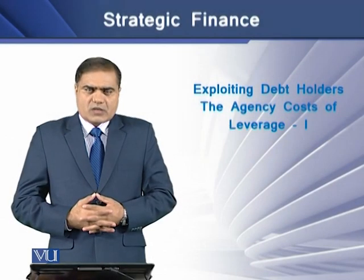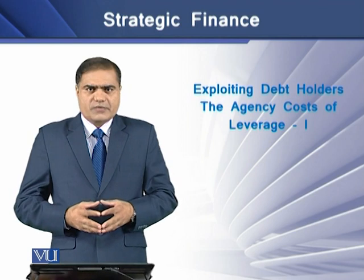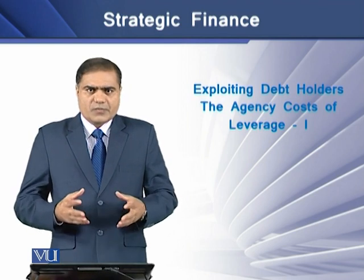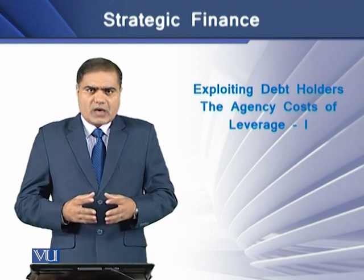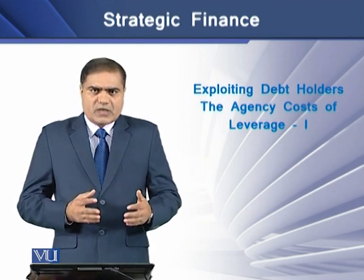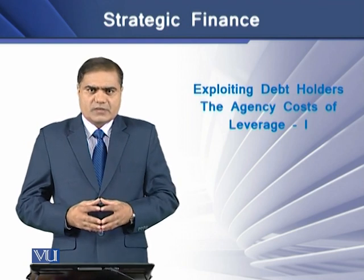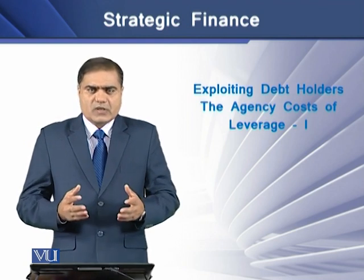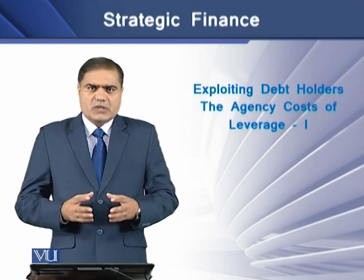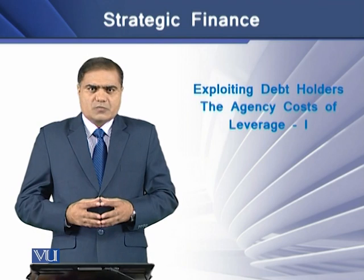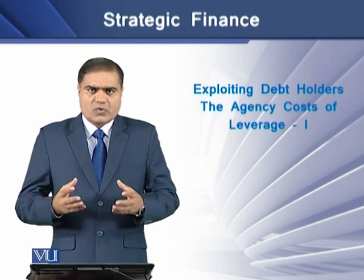Agency costs occur where there is a conflict of interest among different stakeholders of the firm. In any firm, the top managers are hired and retained as per the directions of the firm's board of directors, who are elected by the firm's stockholders. So these top managers are assumed to work in the best interest of the firm's stockholders.